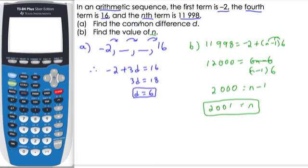So as a quick recap, to find the common difference, we take negative 2 and we add 3d's, solve for d,